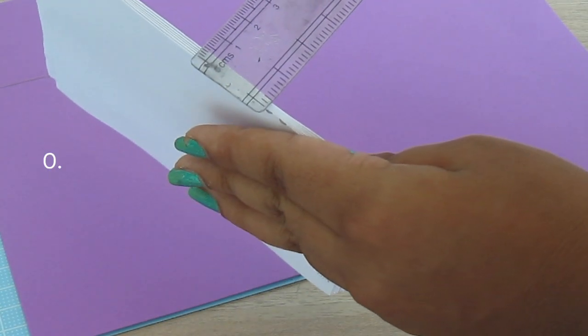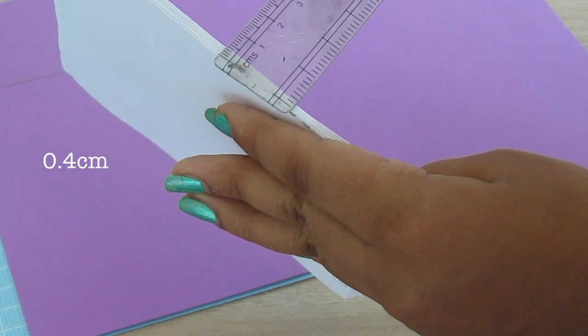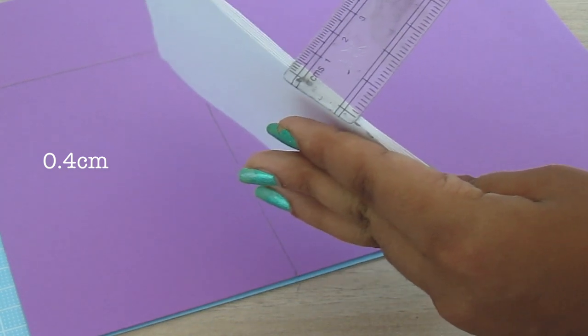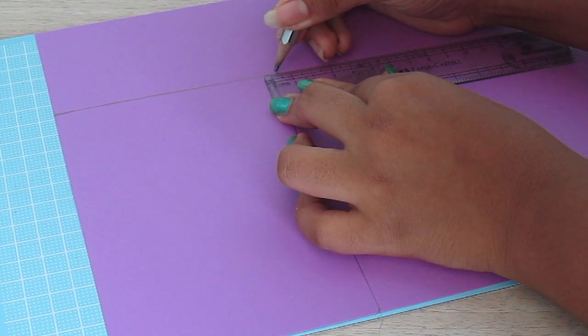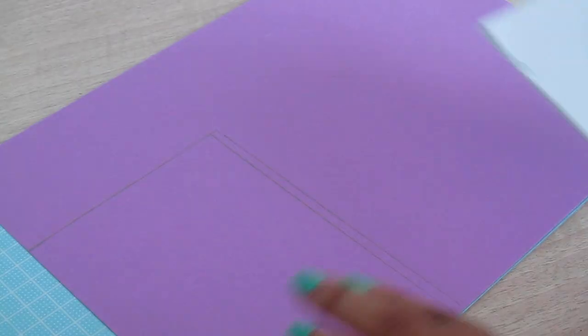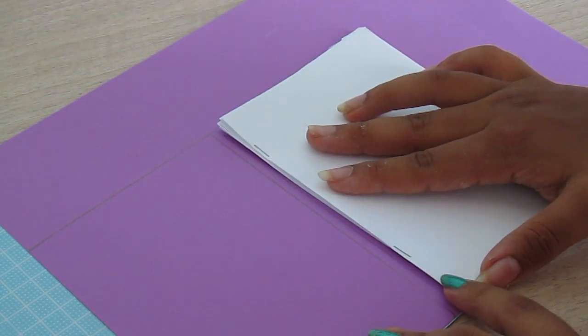If I took the thickness of this, it would be about 0.4 centimeters, so we need to include that while measuring our cover as well. We're going to create an extra 0.4 centimeter space area, and then again retrace your base right next to that 0.4 centimeter space.